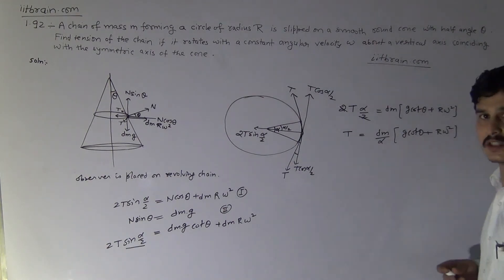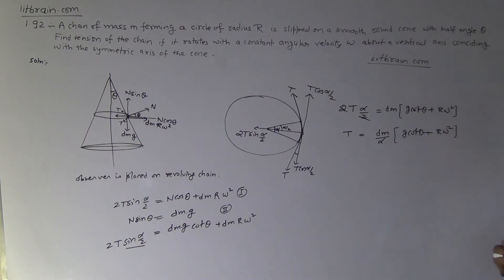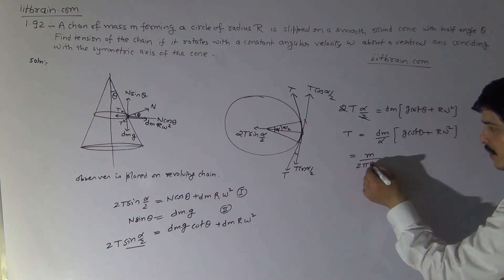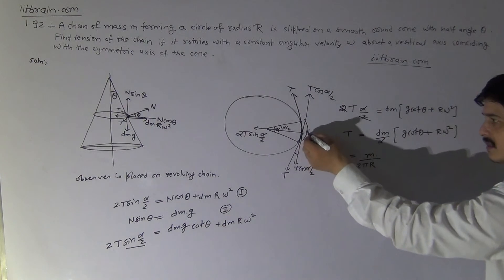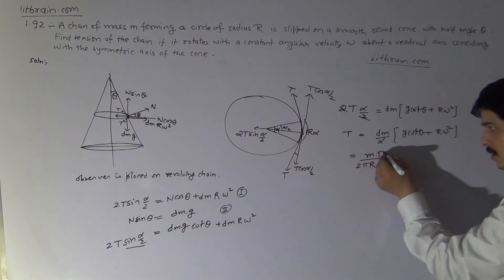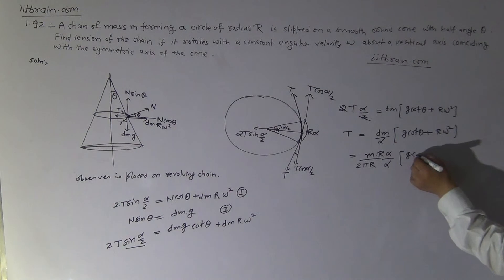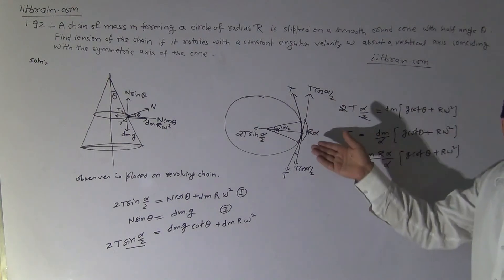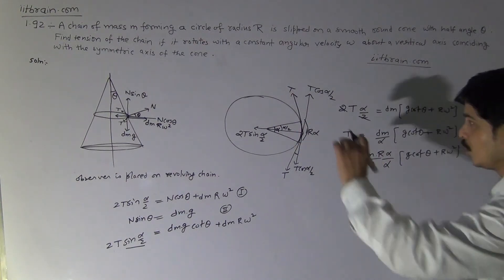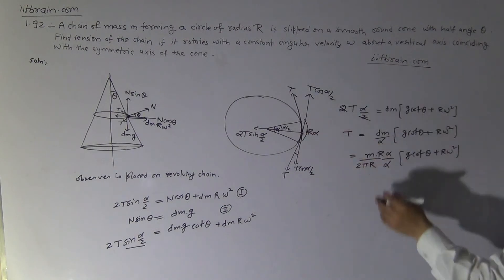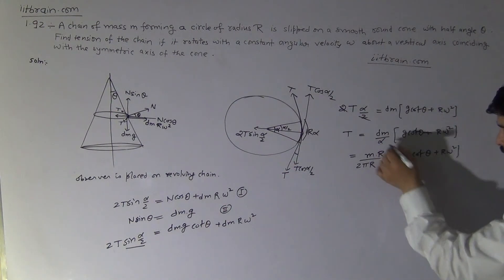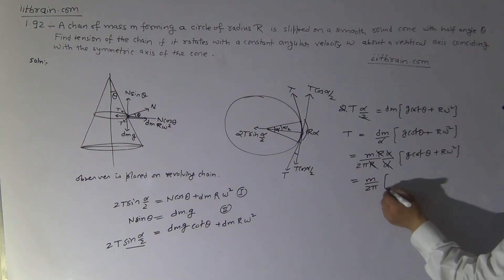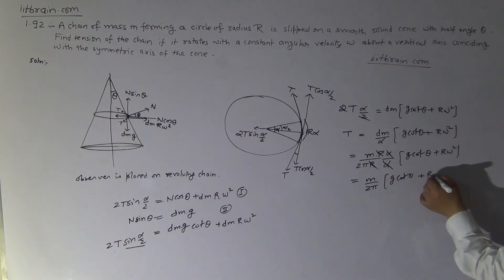The mass of the small segment is dm = (M / 2πR)·(R·α) = M·α / (2π). Substituting: T = [M·α/(2π·α)]·(g cotθ + R·ω²). The α cancels and R cancels, giving the final result: T = M/(2π) · (g cotθ + R·ω²). This is the tension at every point of the chain.